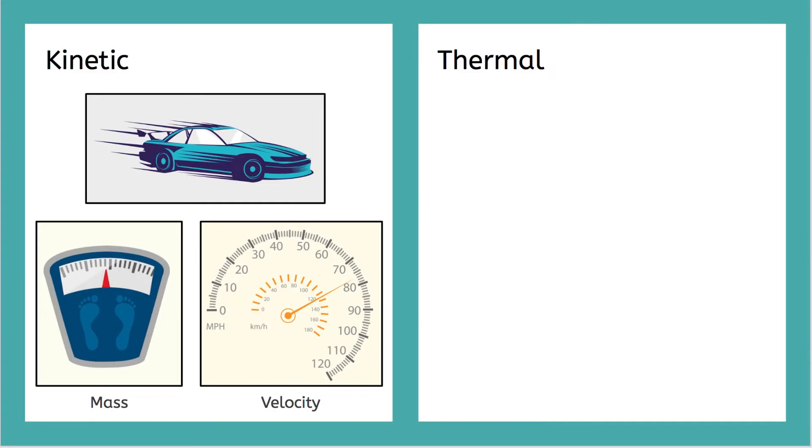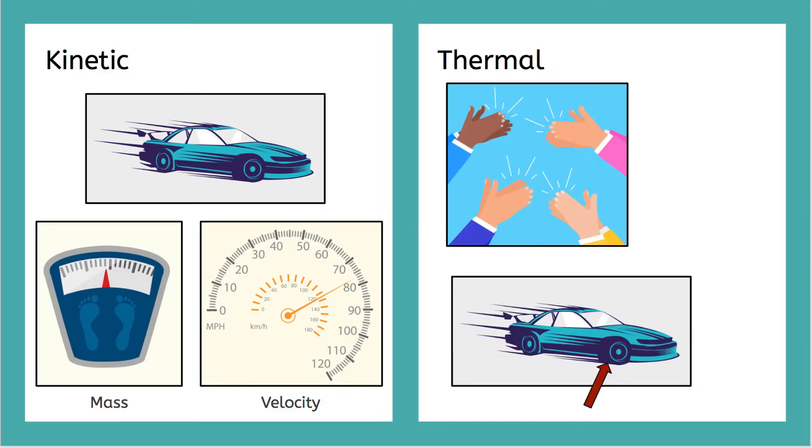And that's because you gave the car kinetic energy when you pushed it. And the car has mass and speed, but the car also had two surfaces, the tire and the floor that were rubbing against each other. And the car moved when you pushed it.